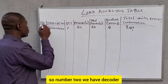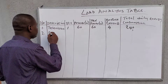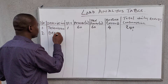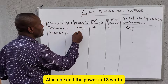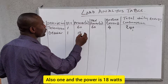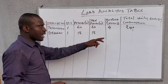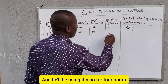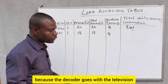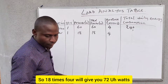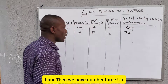Number two is the decoder — quantity one, power rating 18 watts, so total power is 18 watts. The client will use it for four hours since the decoder goes with the television. So 18 times four gives 72 watt-hours.